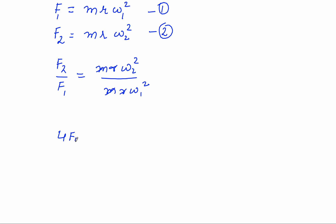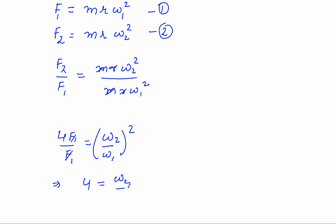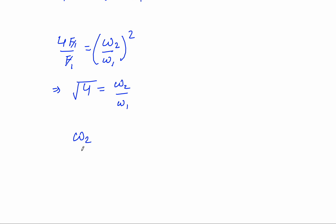Force F1 equals M R omega1 squared. Mass is not going to change and radius is not going to change, so I am not putting any notation on M and R. Since this is the initial force, this will be the initial angular velocity omega1. Similarly, for F2, I can write M R omega2 squared. Now dividing equation 2 by equation 1, we get M R omega2 squared divided by M R omega1 squared. M R and M R will get cancelled out.